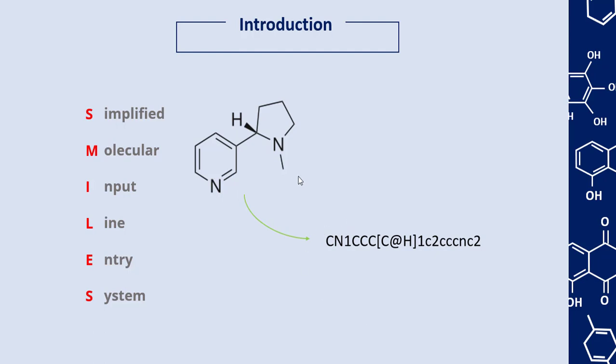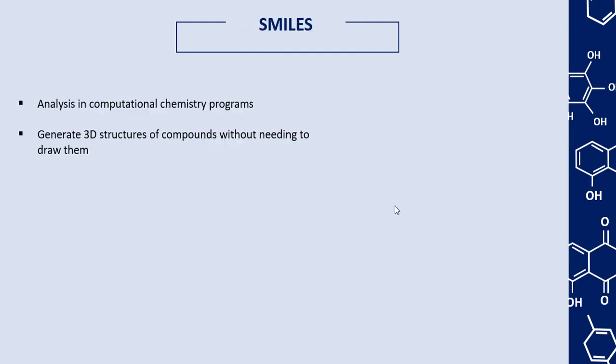For example, we have a three-dimensional structure of a molecule, and here we have the 1D or linear representation of this three-dimensional molecule. In cheminformatics and medicinal chemistry, we have a lot of computational chemistry software, and all of these programs can use SMILES to generate the molecular structure of a compound in order to analyze it. So we can generate 3D structures of compounds without needing to draw them.